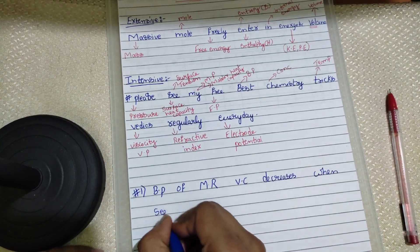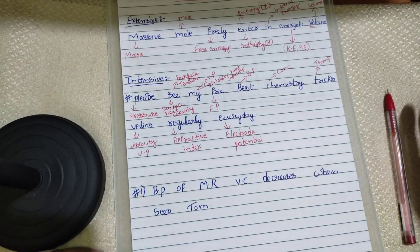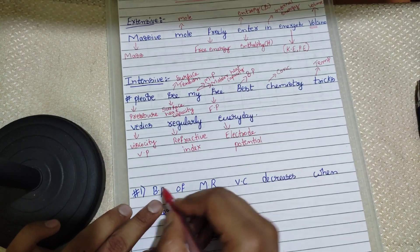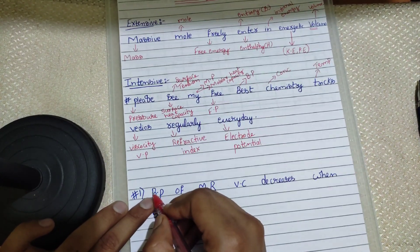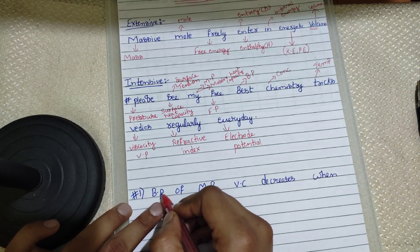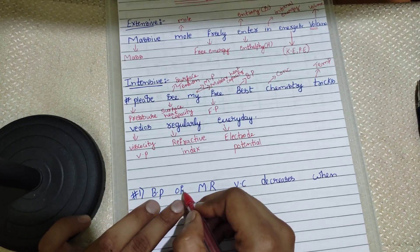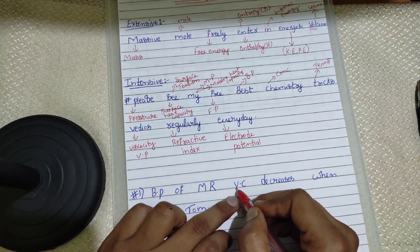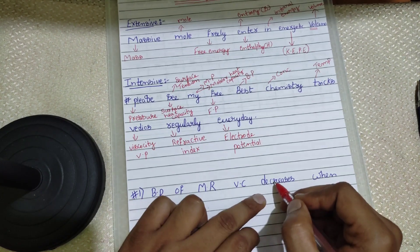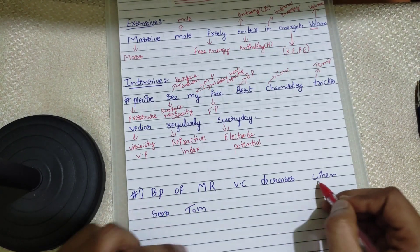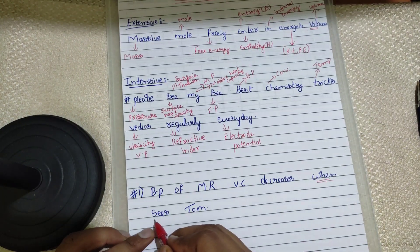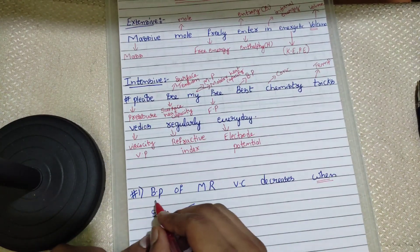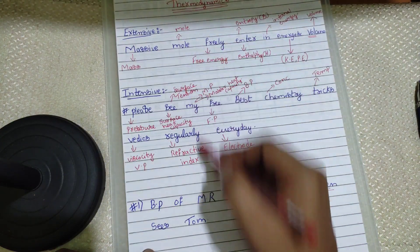From B: boiling point; P: pressure; F: freezing point; M: melting point; R: refractive index; V: viscosity and vapor pressure; C: concentration; D: dielectric constant. From S: surface tension; T: temperature. You can rewind and listen carefully.